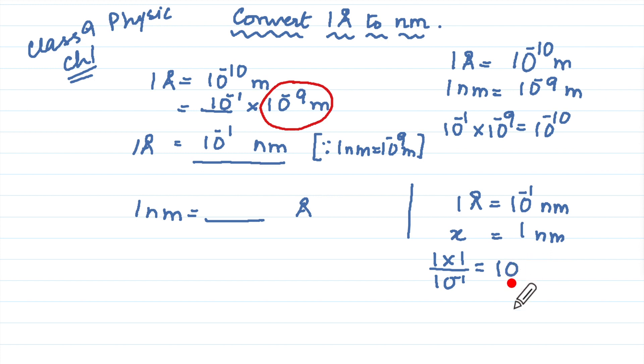That is equal to 10, because this power negative will come up in the numerator, 10 to the power 1. So 1 nanometer is 10 to the power 1 angstrom. So we can write it as 1 nanometer is 10 angstrom units.